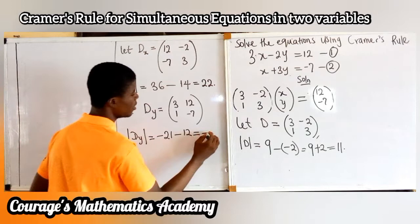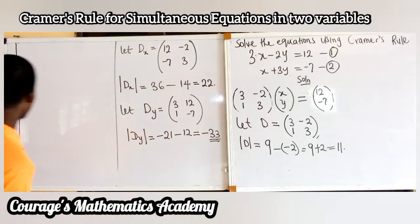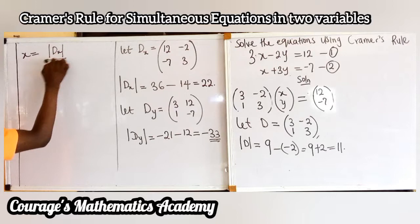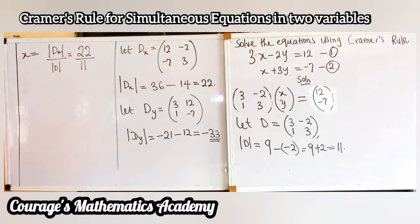Now, having done all of this, we are still looking for x and y. We say x is equal to the determinant of Dx over the determinant of D. The determinant of Dx is 22, and the determinant of D is 11. So 22 divided by 11 gives me 2. That's the value for x as far as this equation is concerned.